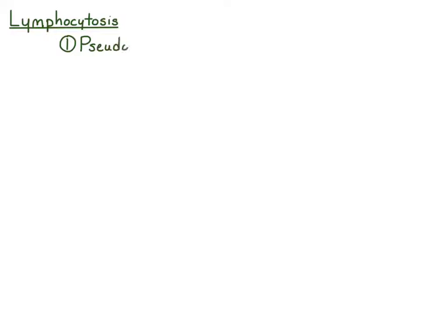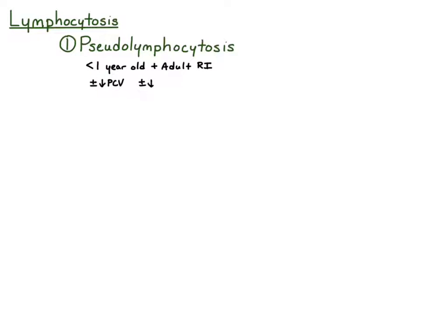The first cause is pseudolymphocytosis, which isn't a true lymphocytosis. It's when you use an adult reference interval for an animal that's less than a year of age. Young animals normally have higher lymphocyte concentrations than adults, and they have some other hematologic differences as well. They often have lower red cell masses, so they'll have lower PCVs, hematocrit, red cell counts, and hemoglobin concentration, and they have smaller red cells too, so the MCVs might be lower.